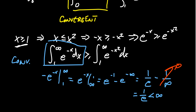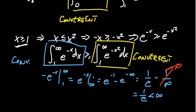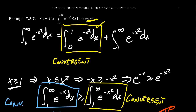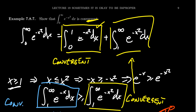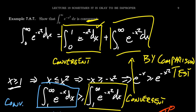And so by the comparison test, if you are smaller than a convergent integral, then you yourself are convergent. So the integral from one to infinity of e to the negative x squared dx is convergent. Coming back to the original integral, we broke it into two pieces: the first one was convergent because it was a proper integral, and the second one is likewise convergent by the comparison test. So when we glue the two things back together, we see that the integral from zero to infinity of e to the negative x squared is in fact a convergent integral.